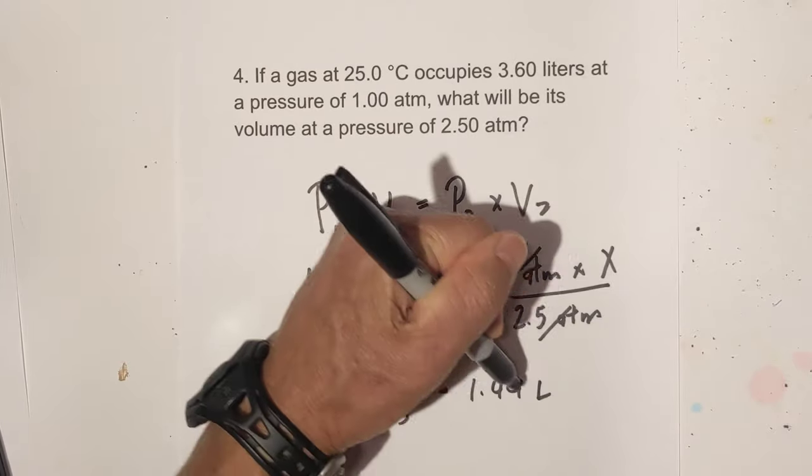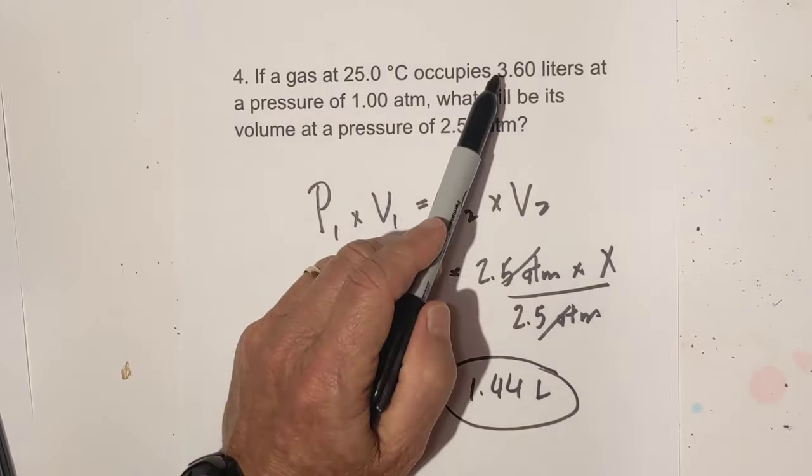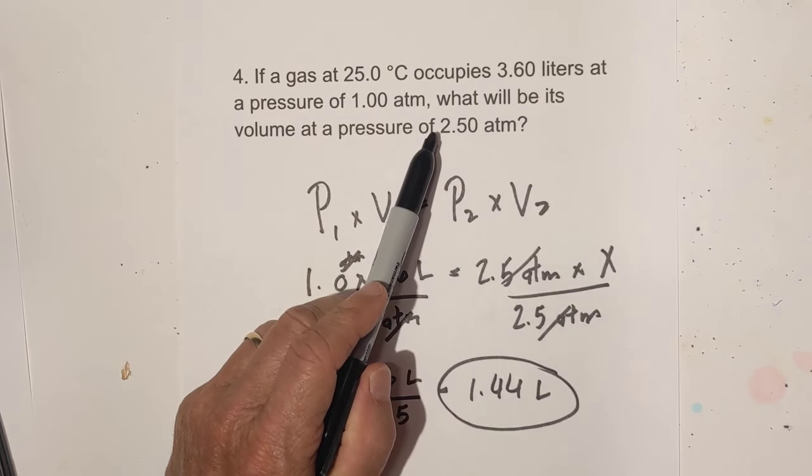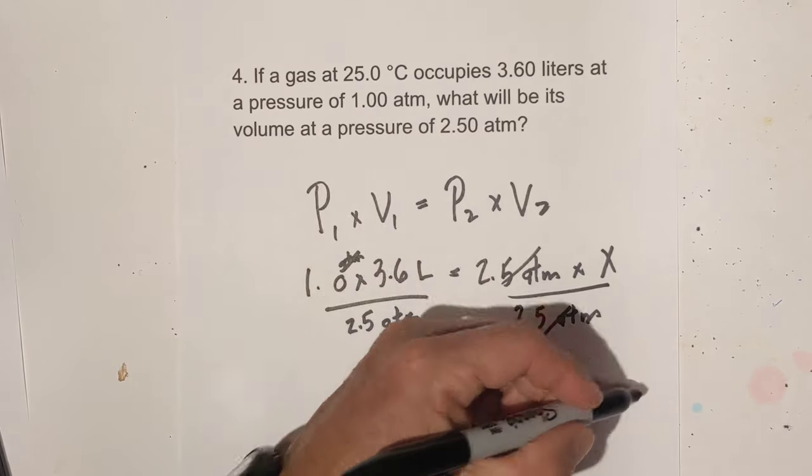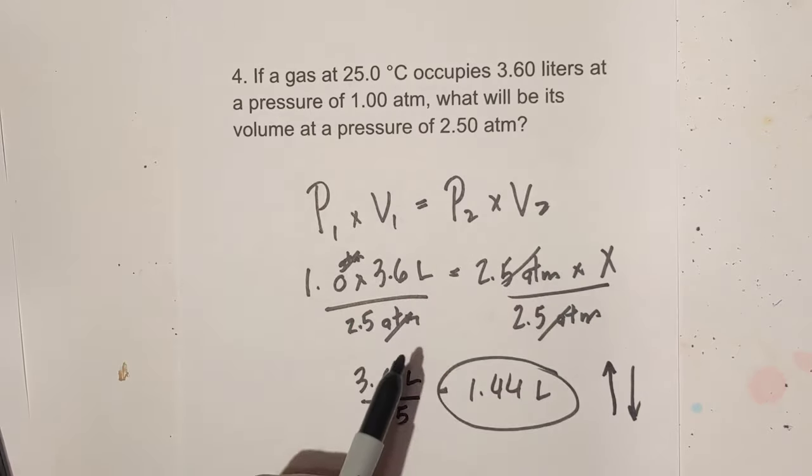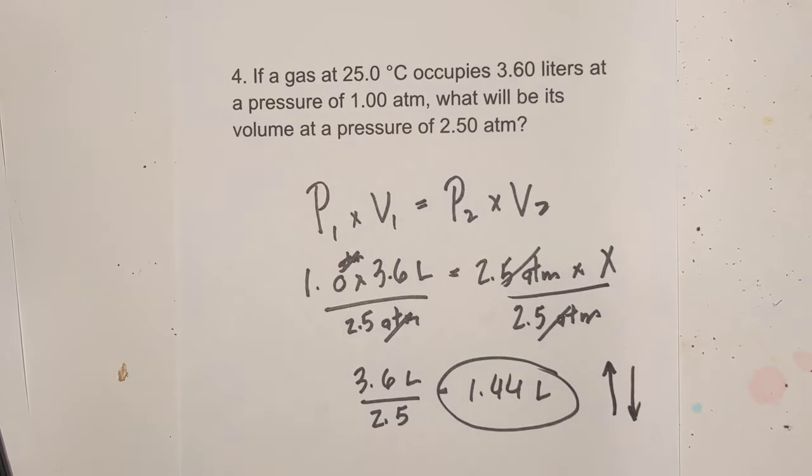And what is the unit of measure? It is liters. Let's check to see if this makes sense. It went from 3.6 to 2.5, so it actually went down. So pressure went down. So that means volume has to go up. And the volume went from 1 to 1.44. So that makes sense.